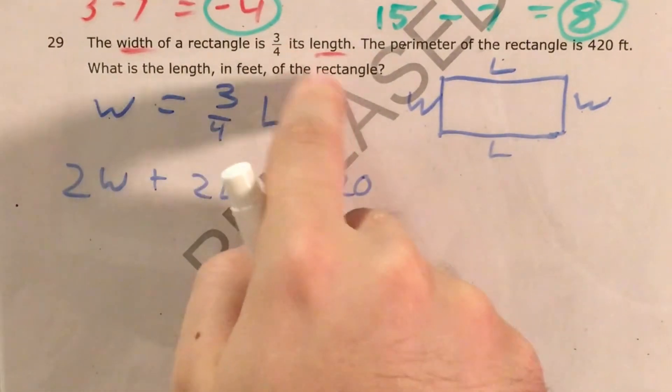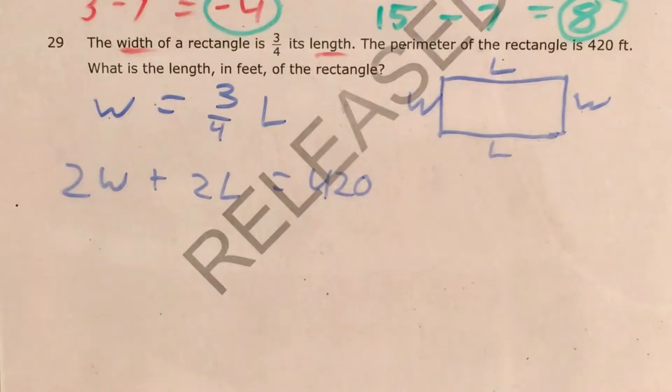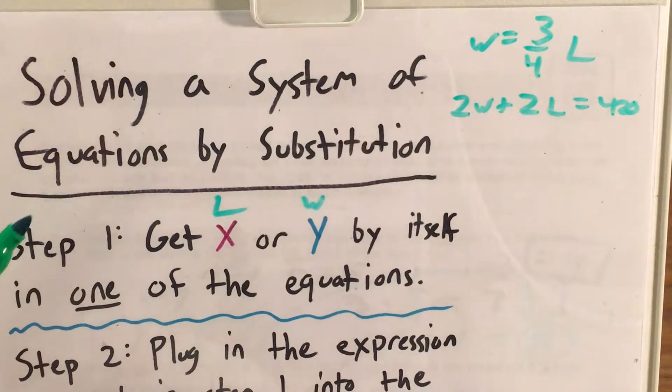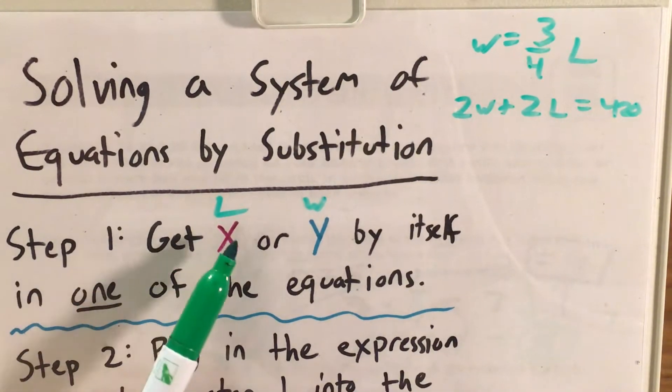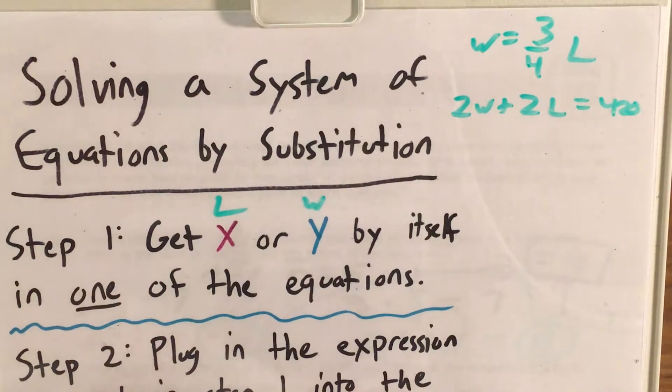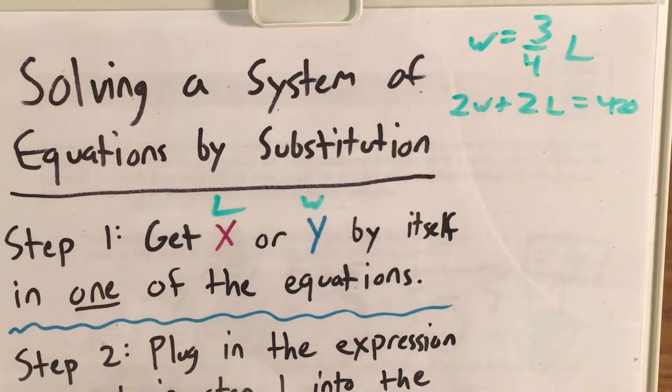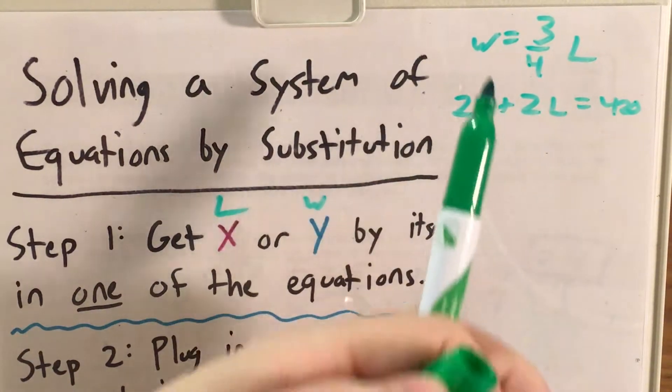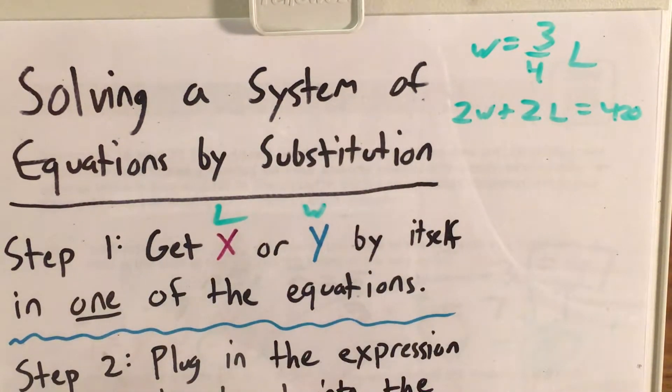So now I have two equations that I've put into a system, and I'm going to go ahead and use substitution to solve that. Okay, so I have my two equations here on my solving by substitution cheat sheet. My first step is going to be to get my length or my width, x or y in a regular problem by itself in one of the equations, and I can see that I already have that. My width is three-quarters of my length, so I already have one of my variables by itself.